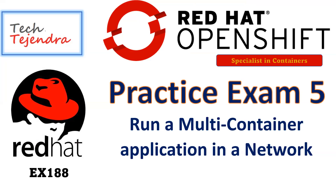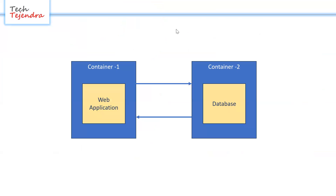In this tutorial we will understand the networking concept of Podman and see how a multi-container application will run by connecting containers with each other using a network. The scenario is: suppose our application needs to run in multi-container — container 1 running the web application and container 2 running the database.